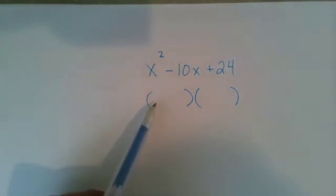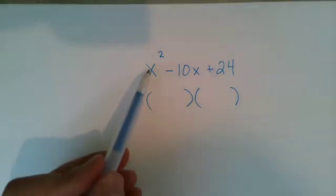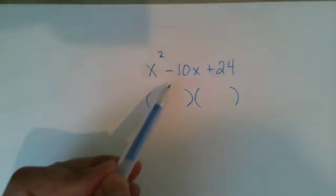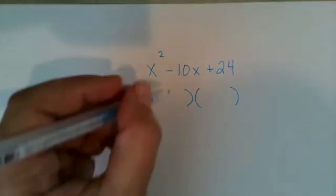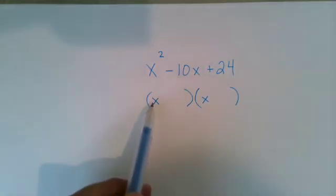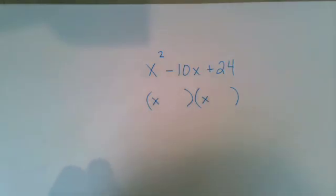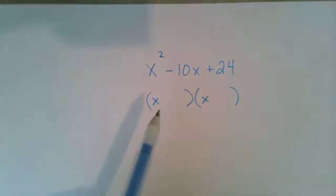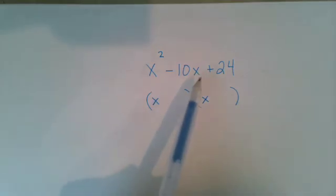So first, we know that the first term in each of our binomials is going to be an x because we see from our x squared term that the first part of our foil, firsts, is going to need to yield an x squared. So that's going to be an x times an x. And now we're going to use the x method to figure out what our next two terms are.